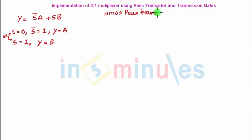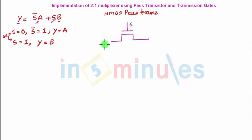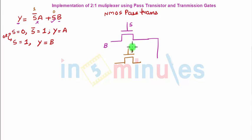Let's implement this using NMOS pass transistor logic. NMOS turns on when a logic 1 is applied at its gate. From the expression, when S = 1 the first term is off and output Y equals B — so we connect B through an NMOS with S at its gate. When S = 0, S̄ = 1, output equals A — so we connect A through an NMOS with S̄ at its gate. Because it's an OR, they are connected in parallel, and this is output Y.